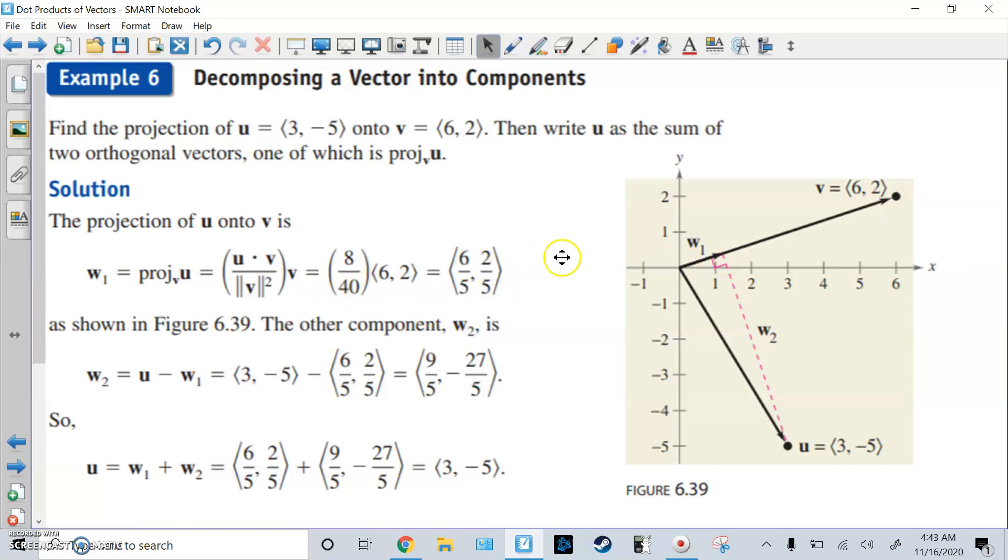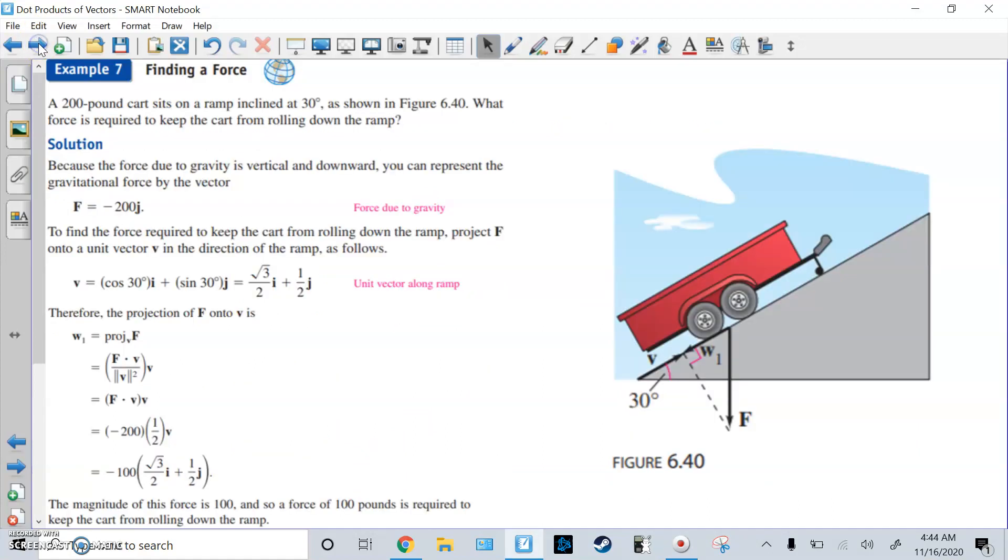All right, once you know W1, to find W2, you just do U minus W1, because W1 and W2 together make this U, this resultant. So (3, -5) minus (6/5, 2/5), gives you (9/5, -27/5). So we now found the two pieces, W1, W2. You need to check. If you add W1, W2, you should get the original U back. Yeah, so 6/5 plus 9/5 is 3. 2/5 plus negative 27/5 is negative 5.